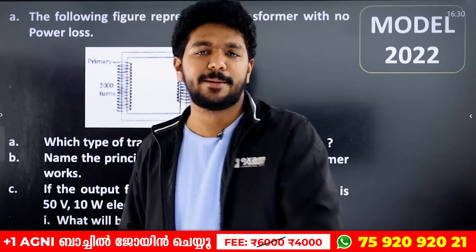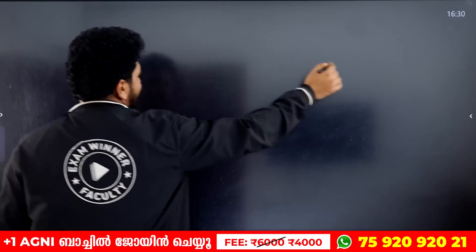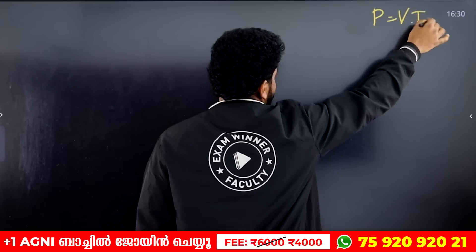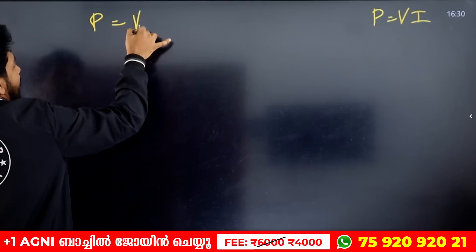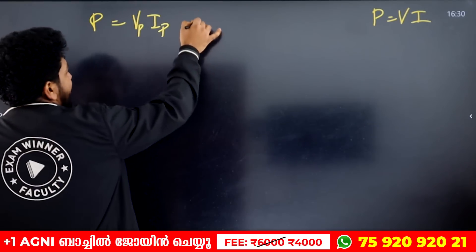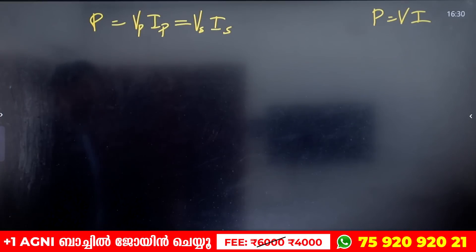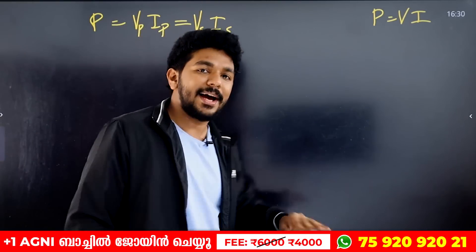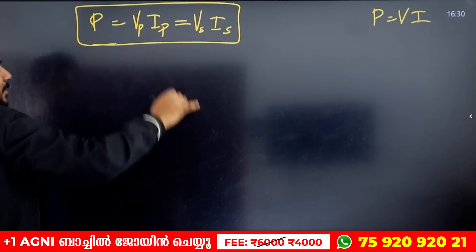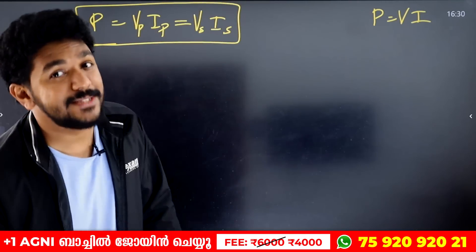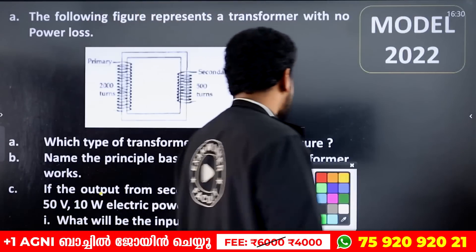The transformer is 100% efficient. The power formula is P equals V into I. For the transformer, primary power equals secondary power: Vp times Ip equals Vs times Is. The voltage is not the same, and the current is not the same, but the power is the same. The transformer is a device which increases or decreases voltage without power loss.